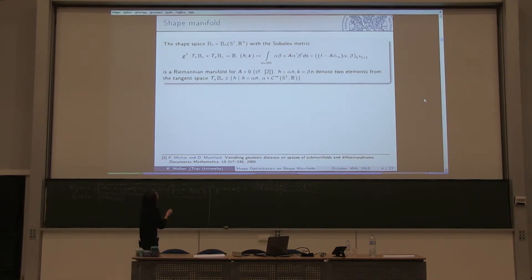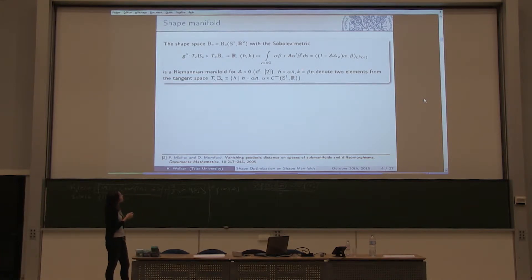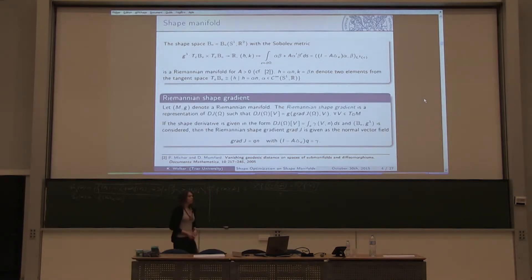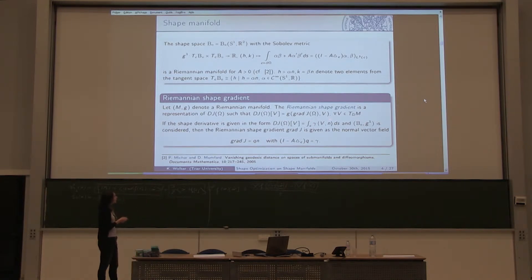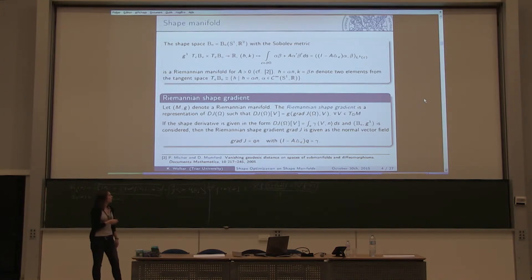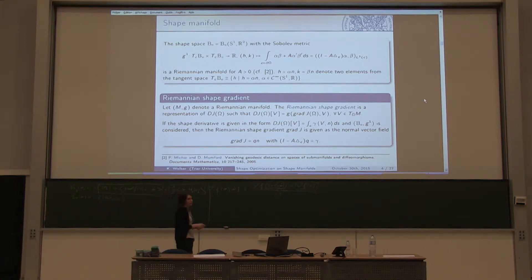Here H and K denote two elements from the tangent space, which is isomorphic to this set, and this symbol denotes the Laplace-Beltrami operator. Now we use the Sobolev metric to build the Riemannian shape gradient. The Riemannian shape derivative is given as a boundary integral. Then our Riemannian shape gradient is given as the normal vector of LQN, where Q is the solution of an equation arising from the definition of the Sobolev metric G1.